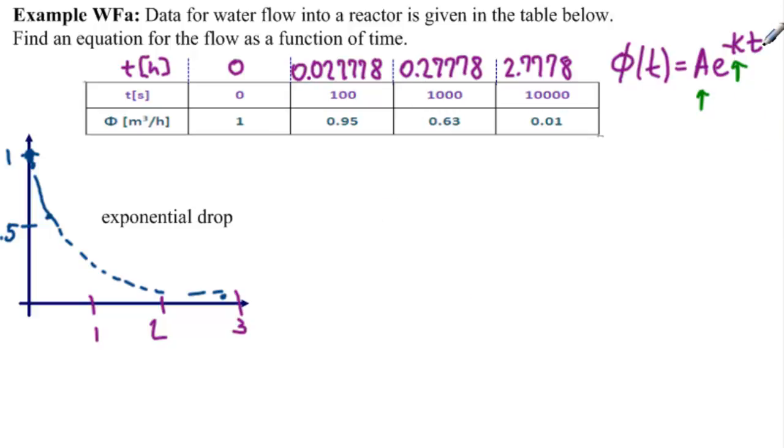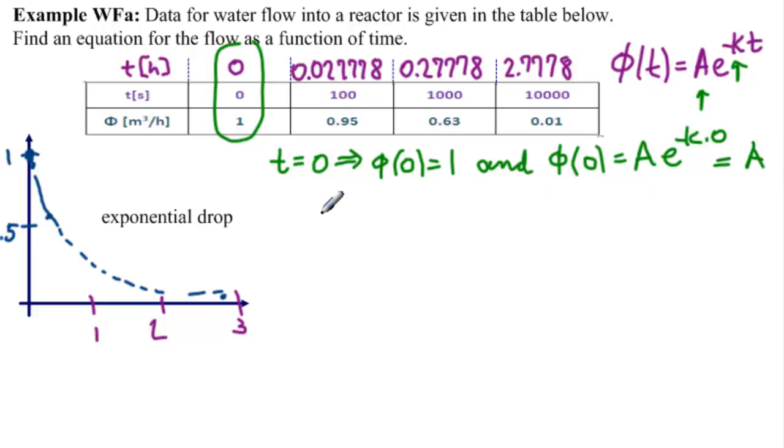A is the easiest one to find. We use t equals 0. So at t equal to 0, what does our table tell us? Our table tells us that phi of 0 equals 1. And from our function, phi of 0 equals A times E to the minus k times 0. Well, this is altogether E to the 0, which is 1. So A equals 1.